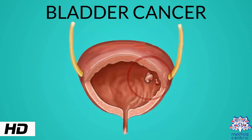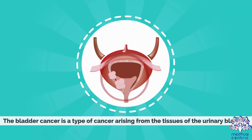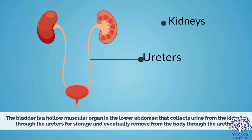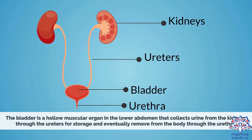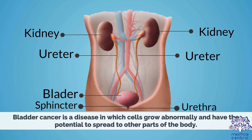Today's topic is bladder cancer. Bladder cancer is a type of cancer arising from the tissues of the urinary bladder. The bladder is a hollow muscular organ in the lower abdomen that collects urine from the kidneys through the ureters for storage and eventually removes urine from the body through the urethra. Bladder cancer is a disease in which cells grow abnormally and have the potential to spread to other parts of the body.